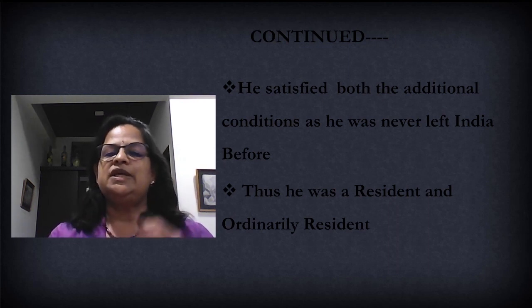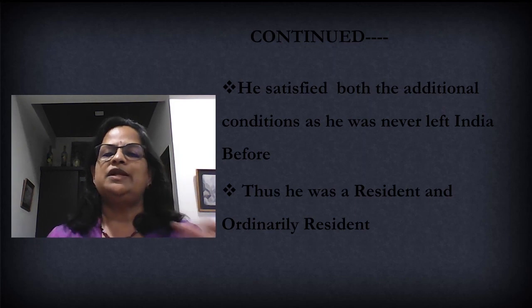He has satisfied both basic conditions and both additional conditions, therefore he is a resident and ordinarily resident. With this we have come to the end of the computation of residential status. I am coming with the fourth module, which is the distinction between capital and revenue — I will explain that in the next module. Thank you.